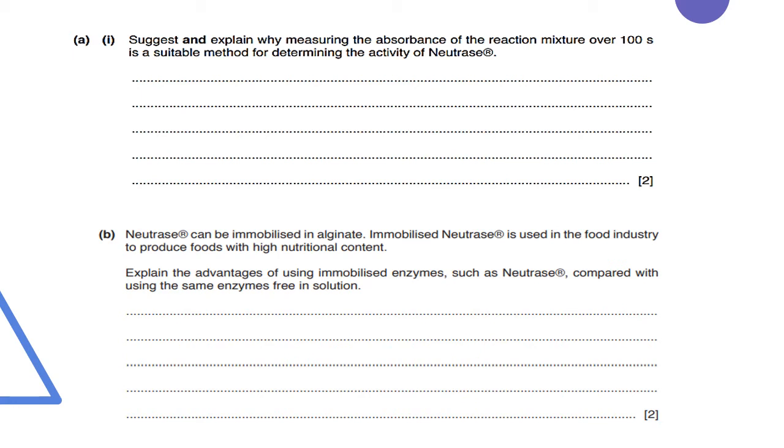For question B, it says Neutralase can be immobilized in alginate. By the way, this is an experiment you need to know how to do. Please ask your school teacher to set it up for you because you might get into a paper 3 and be asked to do an immobilization experiment. It can be immobilized in alginate, immobilized Neutralase is used in the food industry to produce foods with high nutritional content. What is the advantage of using immobilized enzymes such as Neutralase compared with using the same enzymes free in solution?